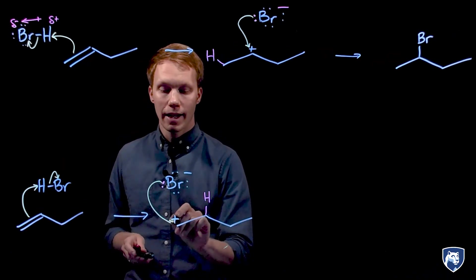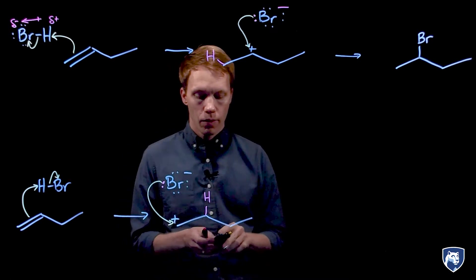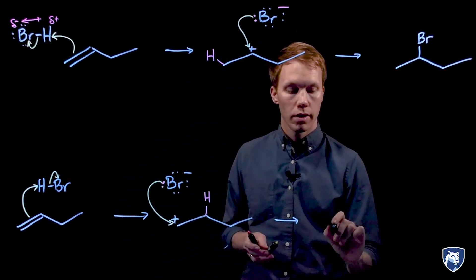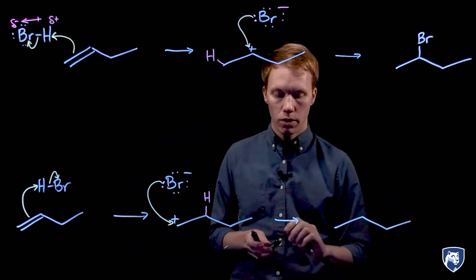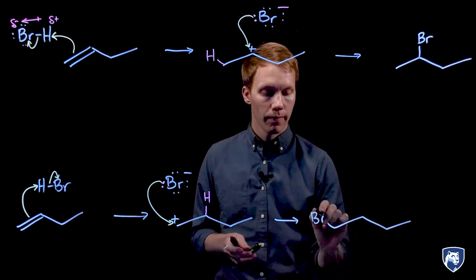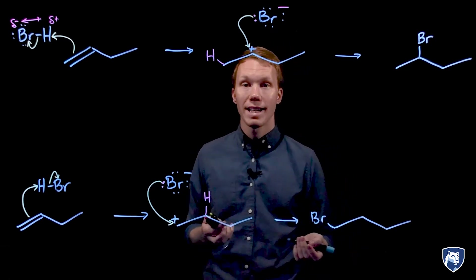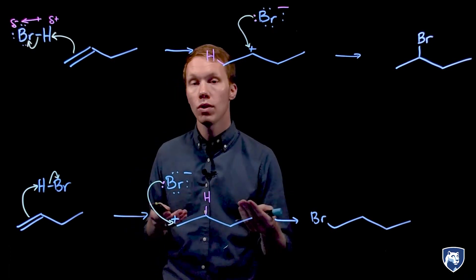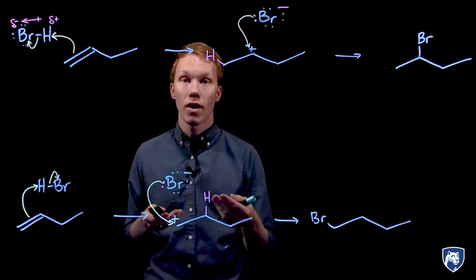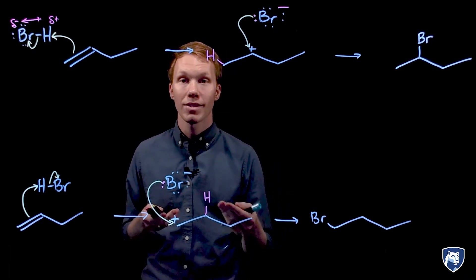Nucleophiles attack electrophiles. We can show that curved arrow and draw the new bond to the bromine. So we have justified now with a mechanism how these two products can form based on our definitions of nucleophiles and electrophiles.